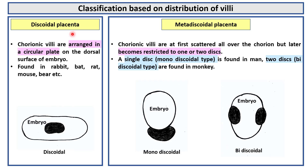Discoidal placenta. In discoidal placenta, the chorionic villi are arranged in a circular plate on the dorsal surface of the embryo. This is found in rabbit, bat, rat, mouse, bear, etc.